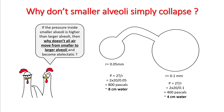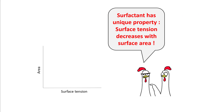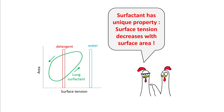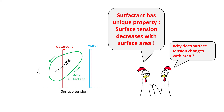So smaller alveoli should empty into the larger alveoli and become atelectatic, but this does not happen. The reason is that surfactant has a unique property: surface tension decreases with surface area. When you add detergent to water, surface tension drops, but when you add surfactant, it forms a loop — shown in green — where surface tension is low when area is small and higher when area is large. This loop is commonly known as hysteresis.